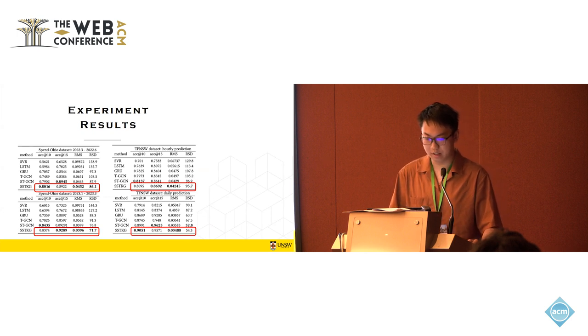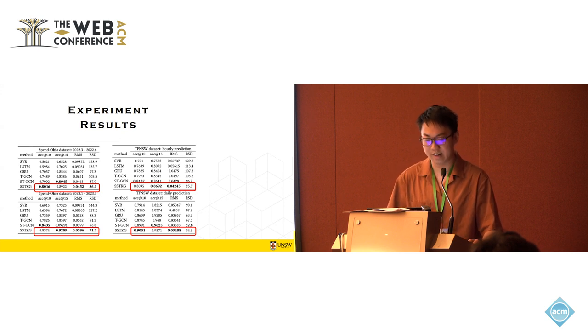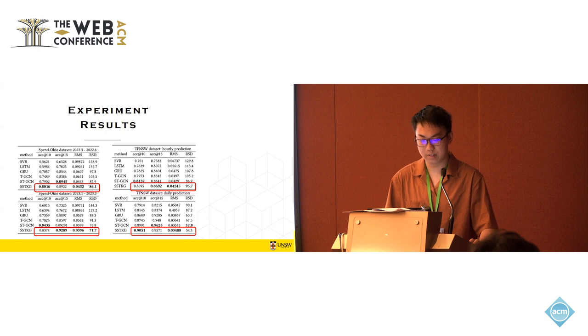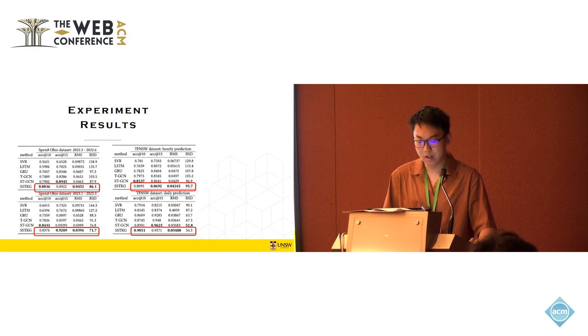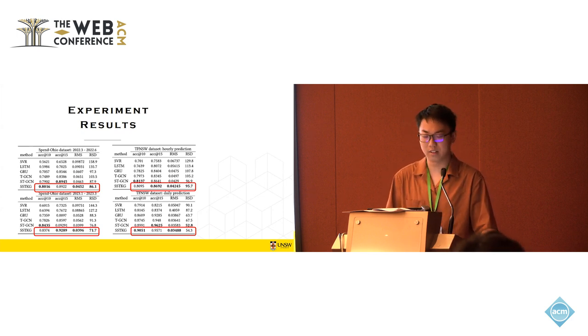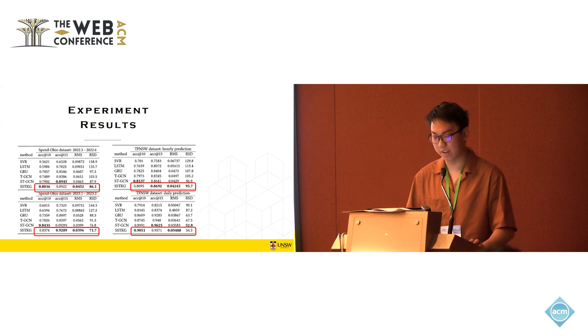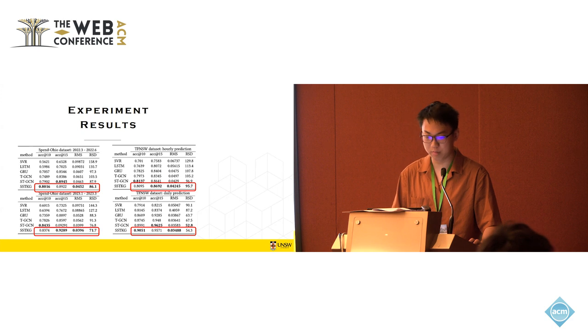So here is comparison of models. We compare our model with SVR, LSTM, GRU, TGCN, and SDGCN. Actually, TGCN, SDGCN, and our model capture both temporal and spatial characteristics. I used accuracy, rooted mean square, and relative standard deviation as evaluation metrics. So we can see that SSKG outperforms those old models that only considered temporal attributes. And it's also better than TGCN. For SDGCN, although SSKG does not completely outperform it, in most metrics, it's similar or better.